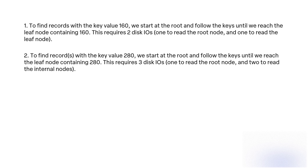Query 2: To find records with the key value 280, we start at the root and follow the keys until we reach the leaf node containing 280. This requires 3 disk I/Os: 1 to read the root node and 2 to read the internal nodes.